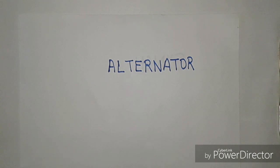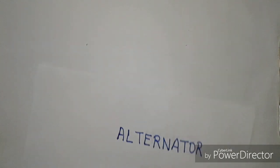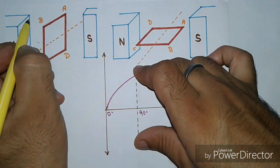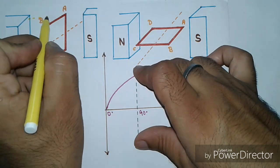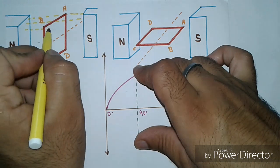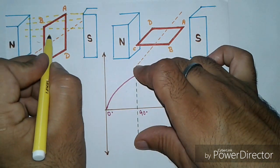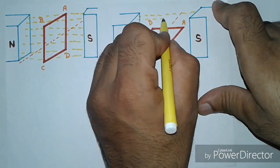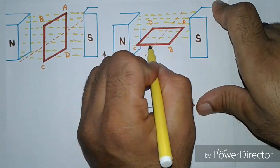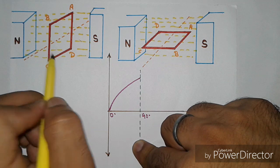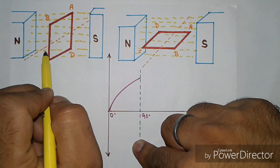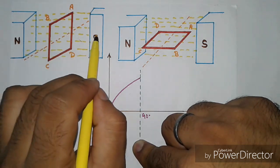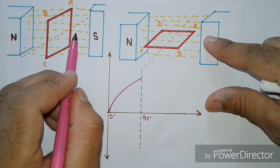To understand the working principle of an alternator, let us consider two opposite magnetic poles — north and south — with flux travelling between them. Between these two magnetic poles, a rectangular coil or single turn is placed. Right now the position of this coil is such that the coil is parallel to the flux — both are in a parallel position.